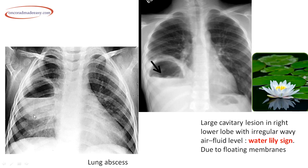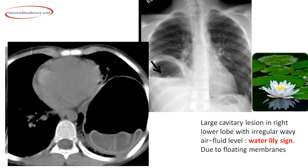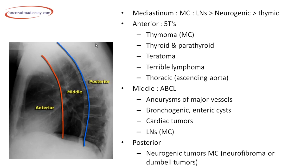On this X-ray, a thick-walled cavitating lesion with air-fluid levels is typical of a pulmonary abscess. Another X-ray shows a thick-walled cavitating lesion with air-fluid levels, but the fluid level is not straight — it shows an irregular wavy outline. This is the water lily sign, seen in hydatid cyst, due to floating membranes of a ruptured hydatid cyst.